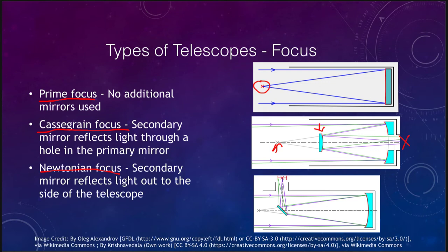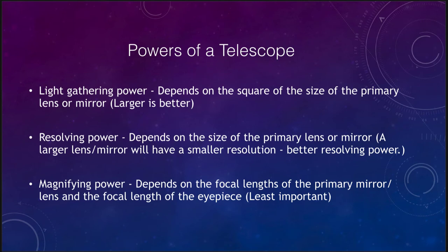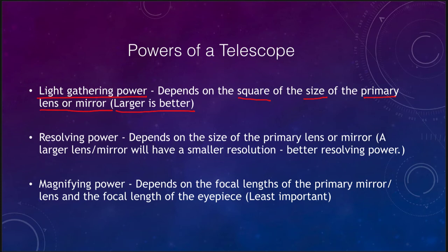Telescopes have certain powers they attain, and we want to look at three important ones. The first is light gathering power, which depends on the square of the size of the primary lens or mirror. A larger telescope will have a larger light gathering power — the bigger the telescope, the fainter the objects it will be able to see.